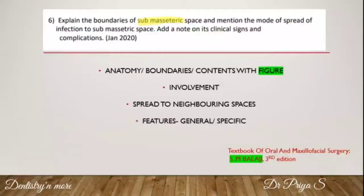Same as for pterygomandibular space infection, mention the anatomy, boundaries, and contents of the space with figures, the involvement, and how spread occurs to neighboring spaces. Also mention the features of submasseteric space infection — both the general and specific features.